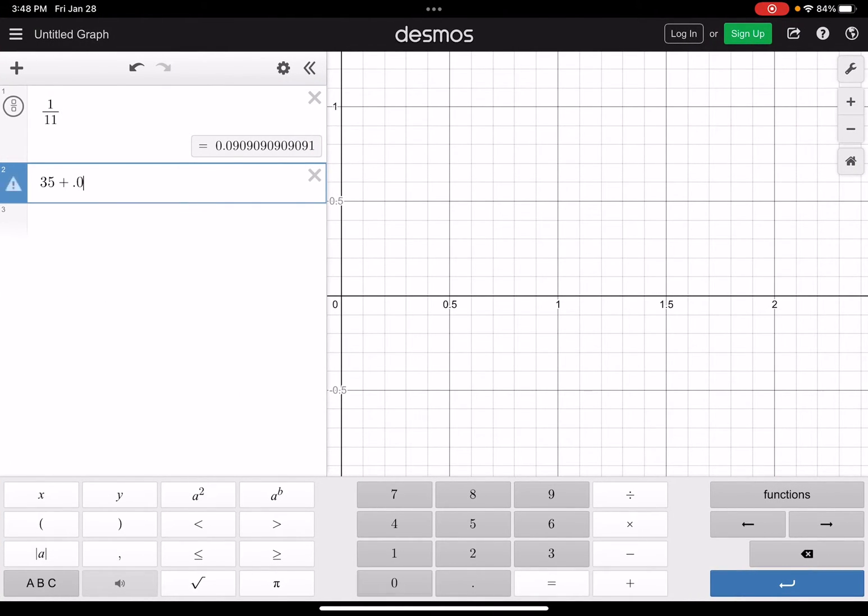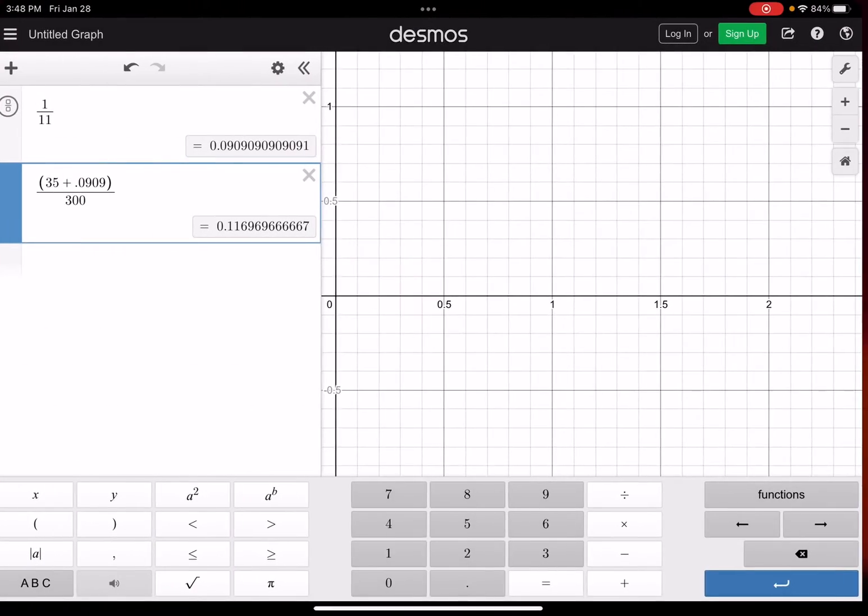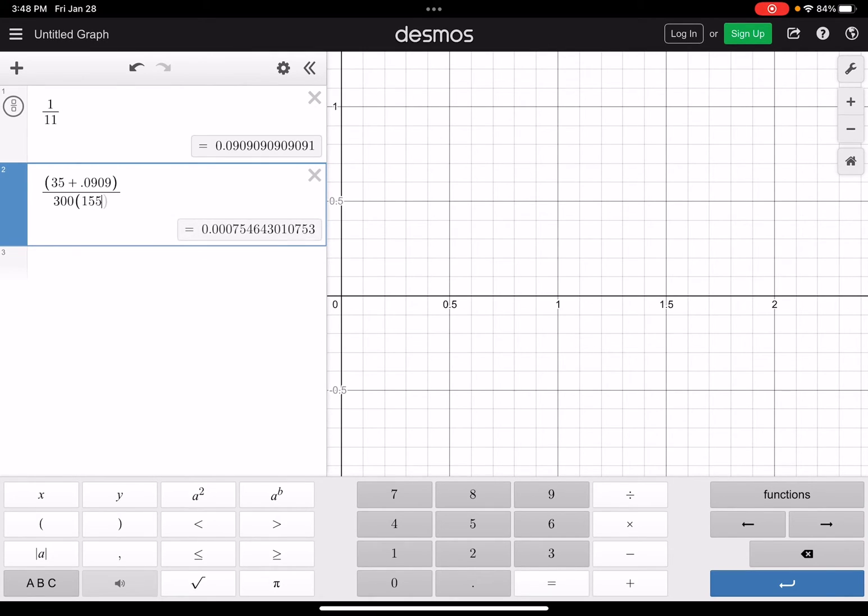We have 35 plus 0.0909, and we're dividing by, I think it was 300 times 155,000. And we get about 7.54 times 10 to the negative seven.